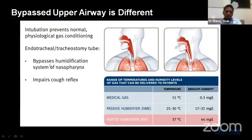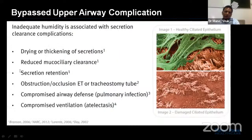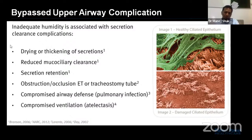When we intubate the patient, the natural pharyngeal gas conditioning system is bypassed. This bypass impairs the humidification system and also impairs the cough reflexes. This leads to inadequate humidity, causing secretion clearance complications such as drying and thickening of secretions, reduced mucociliary clearance, secretion retention, obstruction of the endotracheal tube or tracheostomy tube, compromised airway defense systems, and compromised ventilation — leading to atelectasis and various kinds of infections.